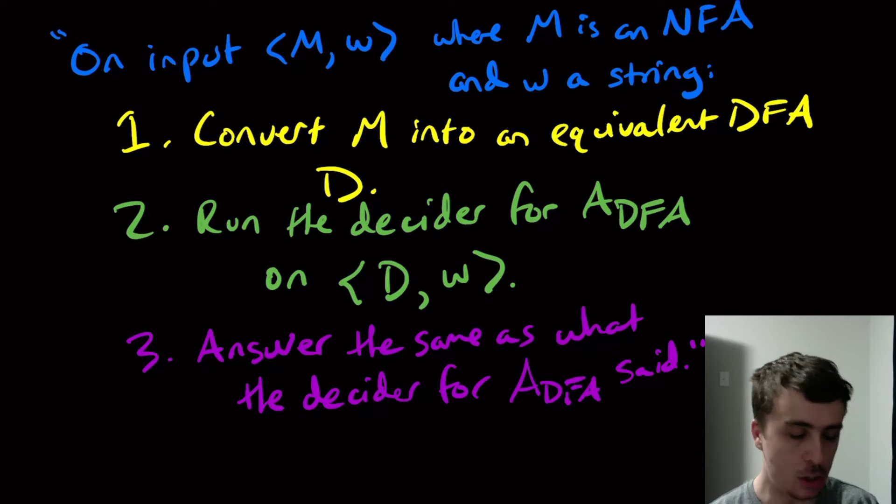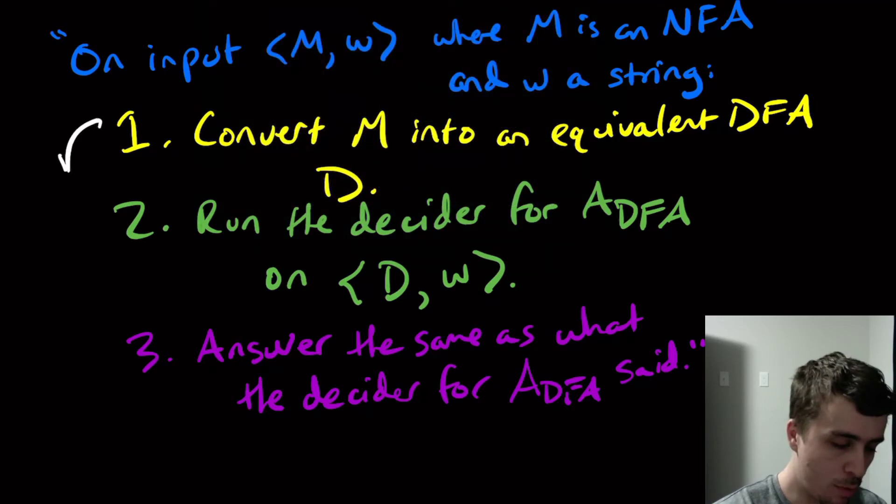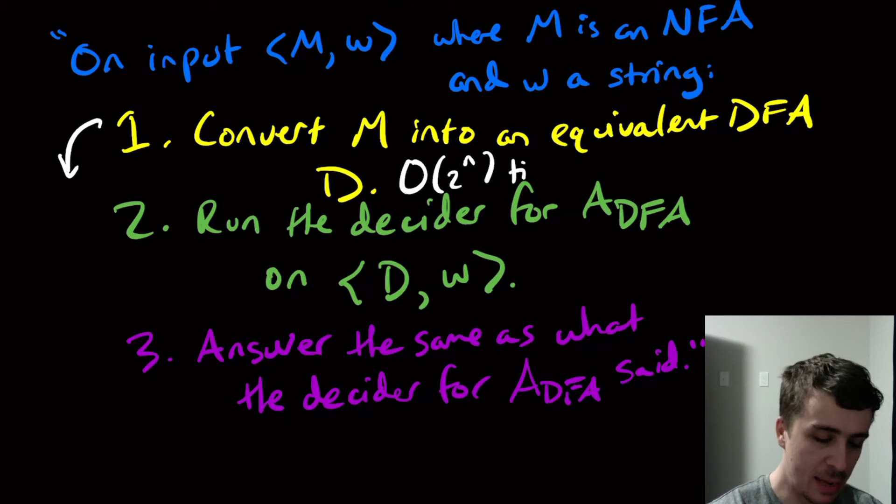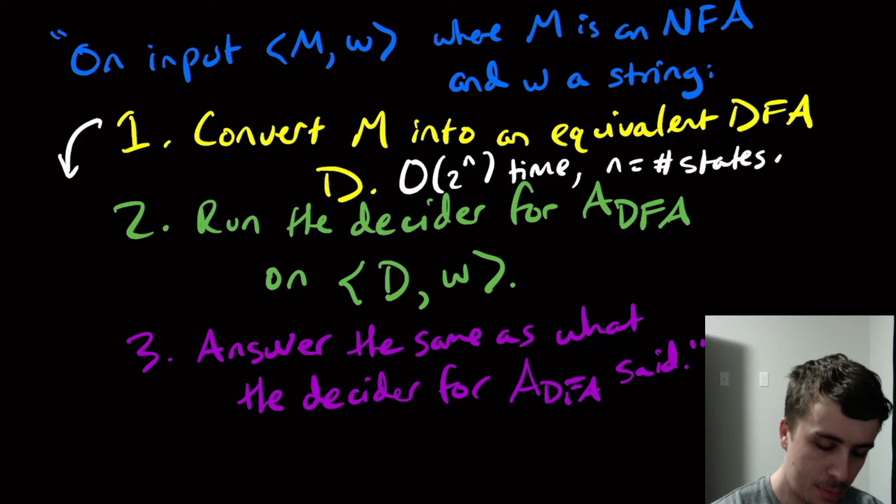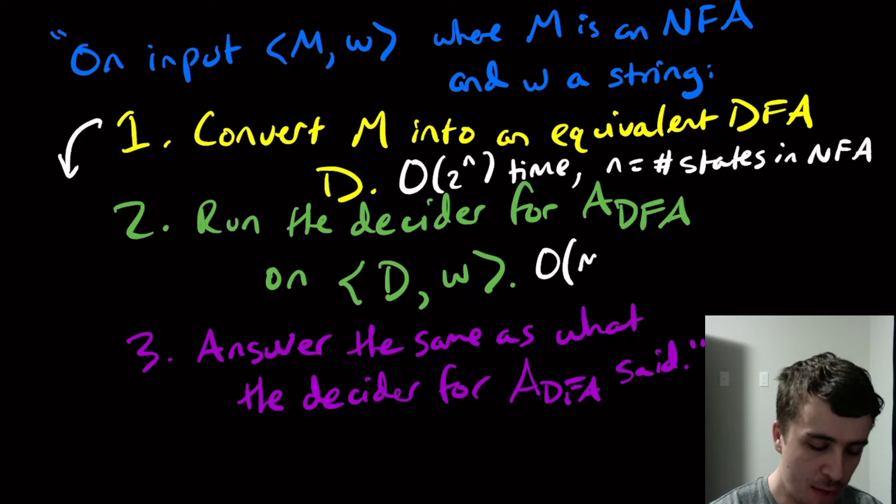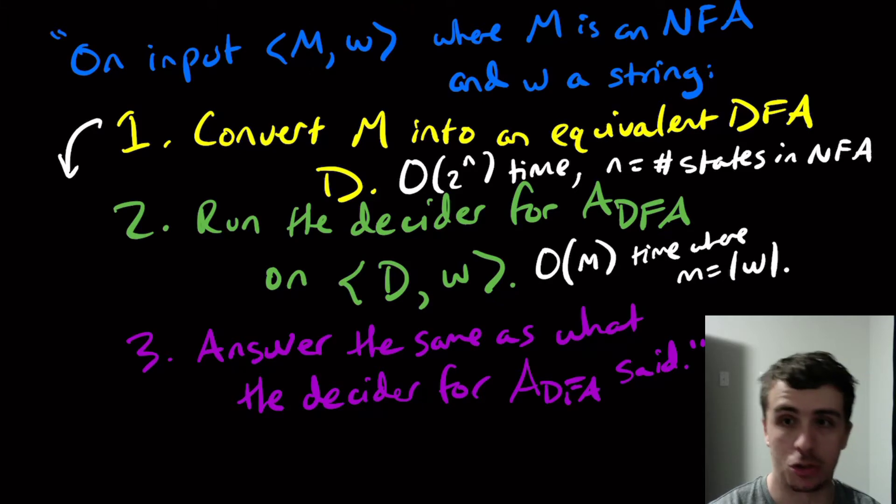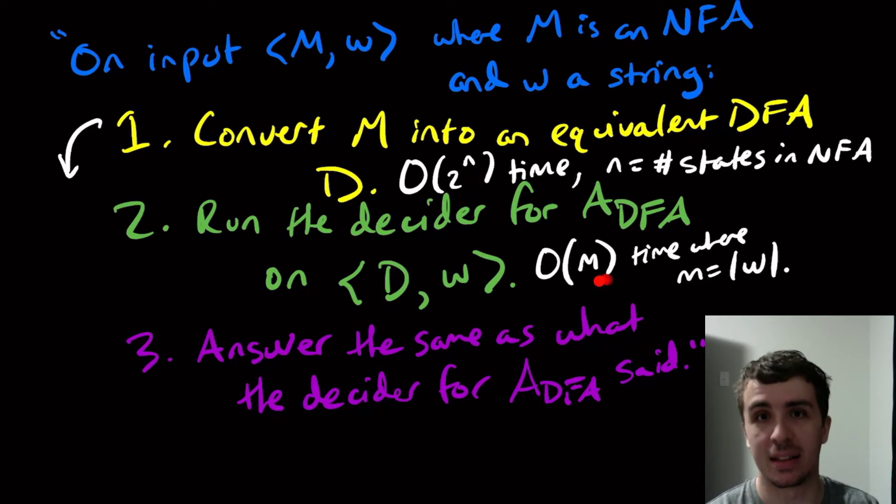One thing that we could do is we could make this a lot faster. So I'll just make a note here. This first step is the one that takes the longest, because this will take a big O of 2^N time, let's say, where N is the number of states in the NFA. And the second step will take O(M) time, where M is the length of the input string.